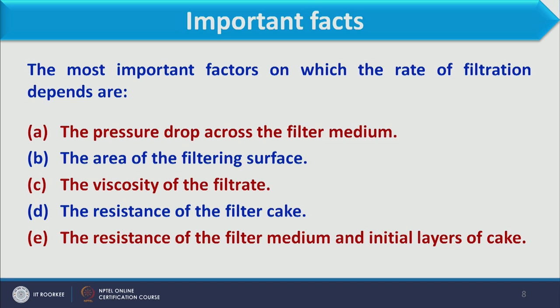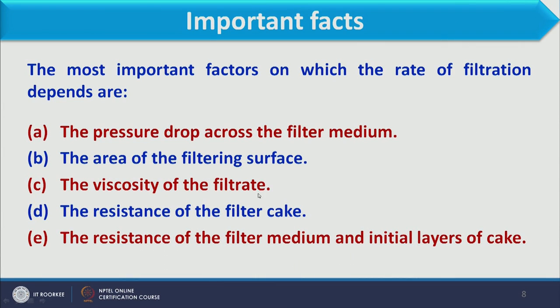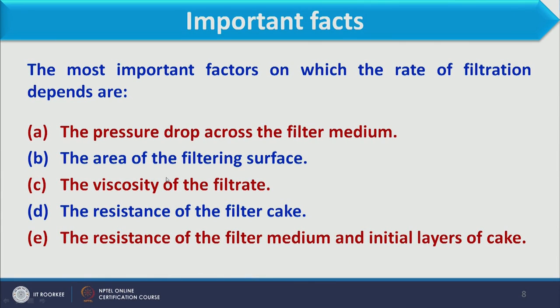Important factors which affect the rate of filtration are: first, the pressure drop across the filter media; second, the area of the filtering surface — when we increase the area we can handle more slurry at one time, but we must use a larger filter media and larger system which is more difficult to handle; and third, the viscosity of the filtrate — it should not be too viscous so that penetration of liquid is easier.